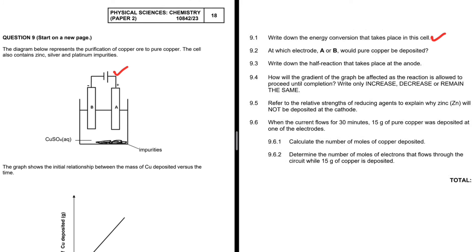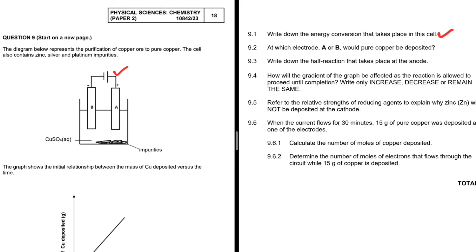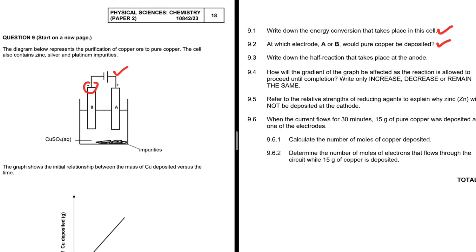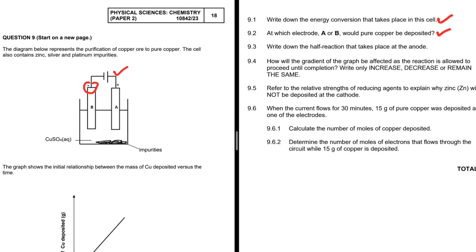Let's take a look at 9.2: at which electrode will pure copper be deposited? Pure copper will get deposited at the negative electrode, meaning the answer to 9.2 is B. Let me show you why it will get deposited at the negative electrode.